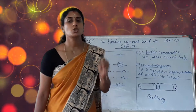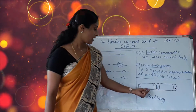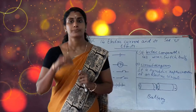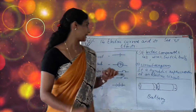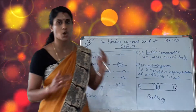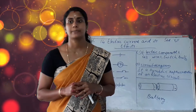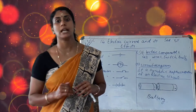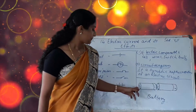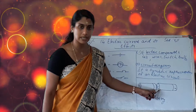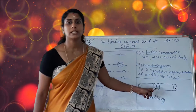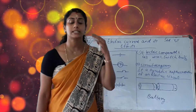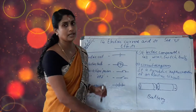Next topic: battery. When two or more cells are joined together, it is called a battery. When cells are put in a line or in parallel, we must join the positive terminal of one cell to the negative terminal of the other cell.